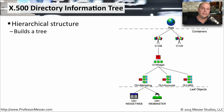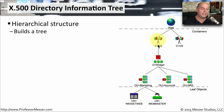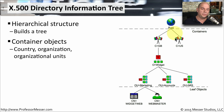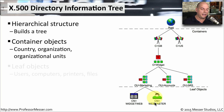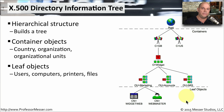Here's a visual breakdown of the information in the database. This hierarchy starts with WidgetWeb as the common name, inside the marketing group, alongside accounts and MIS groups, all rolling up to the Widget organization — specifically the Great Britain part, though there is a US component as well. Everything rolls up to the root of the LDAP directory. The broader groups in the middle are called container objects — they can be a country, organization, or organizational unit — while the devices at the bottom are leaf objects, such as users, printers, and file servers.